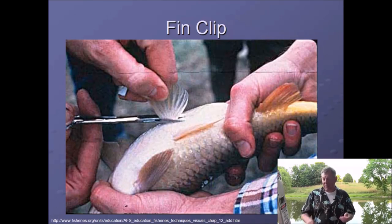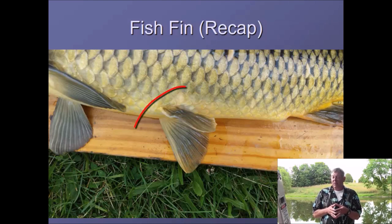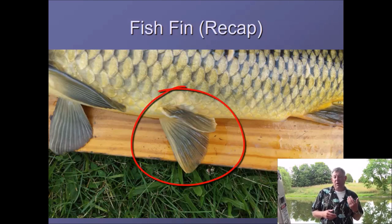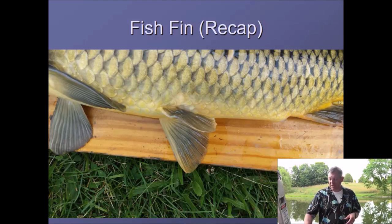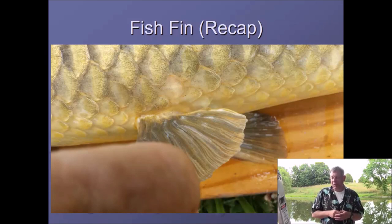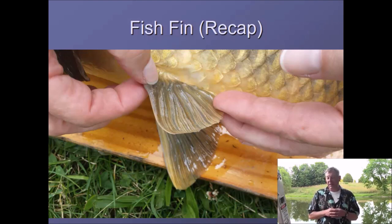Here's an example of a carp that's a recap — these are carp we were fin clipping to estimate population size. If you look at the pelvic fins, you can see the clipped one, which is shorter than the other and the rays are kind of bent. Eventually we'd expect the fin to grow all the way back, but you can still see the disruption in the rays, which tells you this is a recap. Here's another example — the clipped fin is shorter, but more importantly the rays are not nice and straight, indicating this is a fin-clipped fish.